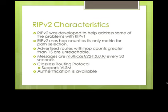RIPv2 also supports Variable Length Subnet Mask. With this, we will actually send our subnet mask along with our updates, whereas RIPv1 did not do that. So RIPv2 can support Variable Length Subnet Mask and discontiguous networks, and we will send our subnet mask along with our updates.